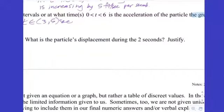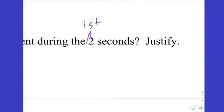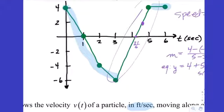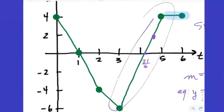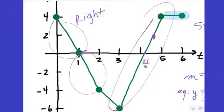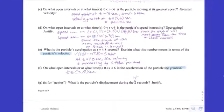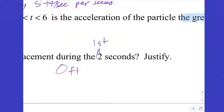What is the particle's displacement during the first two seconds? The velocity is positive (moving right) in the first second and negative (moving left) in the second second. The slope of the line is the same throughout, so it's moving to the right at the exact same rate as it's moving to the left over the same amount of time. Therefore the displacement should be zero.